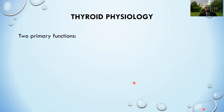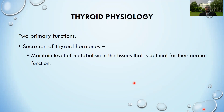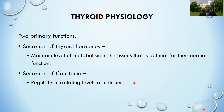The thyroid gland has two primary functions: one is secretion of thyroid hormones, which are important for the maintenance of normal metabolism, and the other is excretion of calcitonin, which regulates the serum calcium levels.